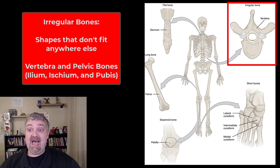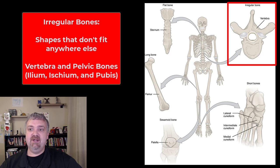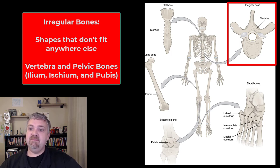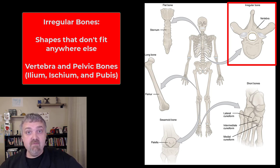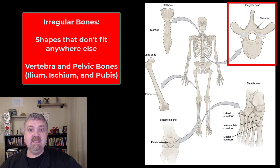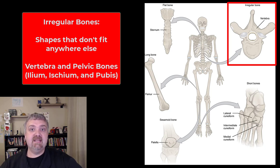Irregular bones are just like, I have no idea what to call this shape, so we're going to call it irregular. They have very complex irregular shapes. The example given here is a vertebra — I don't know how I would describe that shape, so it's irregular. The bones of your pelvis, your coxal bones — your ilium, ischium, and pubis — would also be classified as irregular bones.